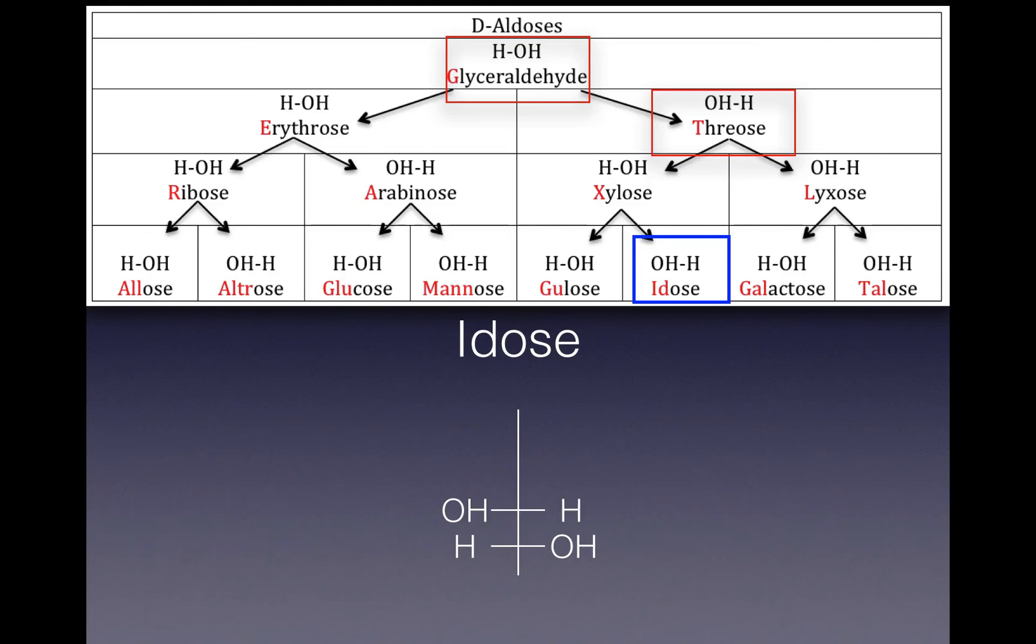Then our next step, we go toward xylose. Since our arrow points to the left, we put our bar in. The H goes on the left and the OH goes on the right, and that's what we do.